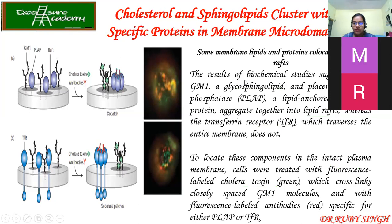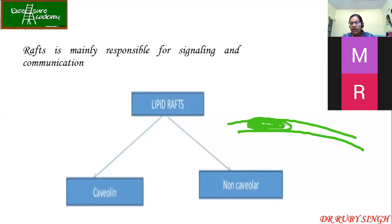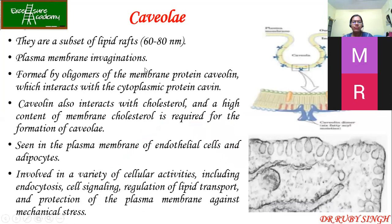There are two types of lipid rafts: caveolar and non-caveolar. Non-caveolar means it is going to be flat — that is what we have seen in the animation. If you have the plasma membrane, non-caveolar patches will be flat. Caveolae, on the other hand, have invaginations on the plasma membrane. These are subsets of lipid rafts.